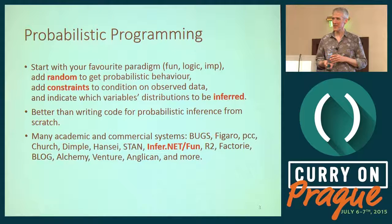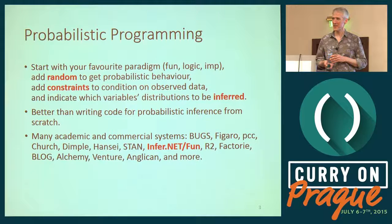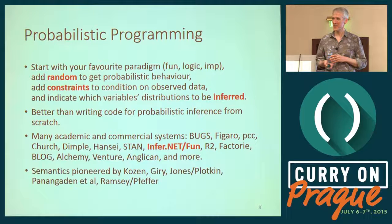There are many other systems: CHURCH is probabilistic programming in LISP, HANSi is probabilistic programming in OCaml. The system we're building on is called Infer.NET — probabilistic programming in C#. We also did a version using F#. But today I'm talking about using Excel. If you want to understand the semantics, there's nice work using the probability monad — a dangerous topic to bring up, but there are good papers to read. I won't go into those details today.